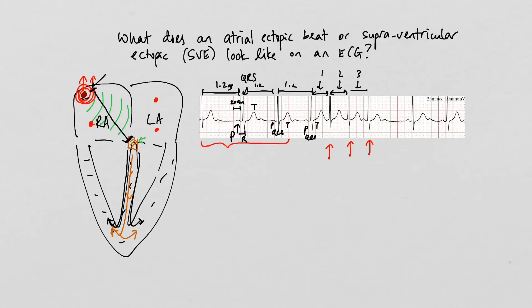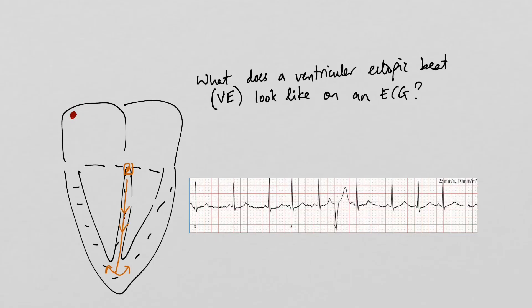After three quick successive firings from somewhere else in the atria, what you can see is a very distinct P wave that looks slightly more peaky than the normal P waves — these are the P waves coming from an atrial ectopic beat. After the last complex, the atrial ectopic beat stops and the next beat resumes at the normal interval of 1.2 seconds with P-QRS-T. The characteristic finding on the ECG is these skinny beats. In contrast, what does a ventricular ectopic beat look like?